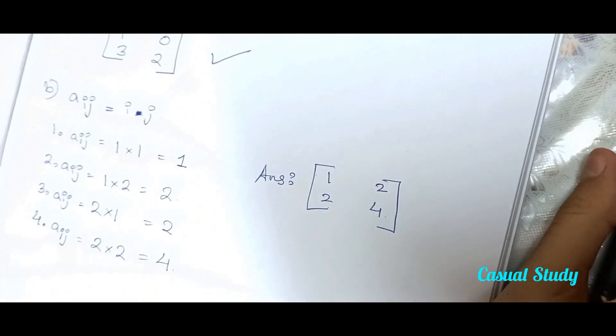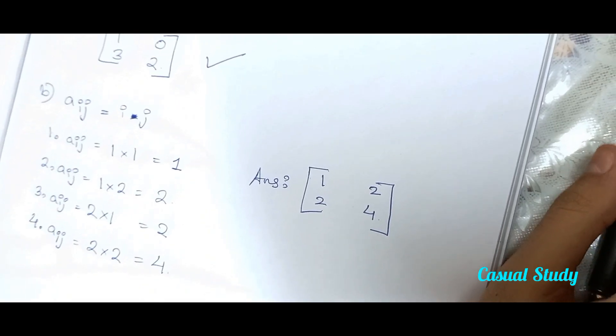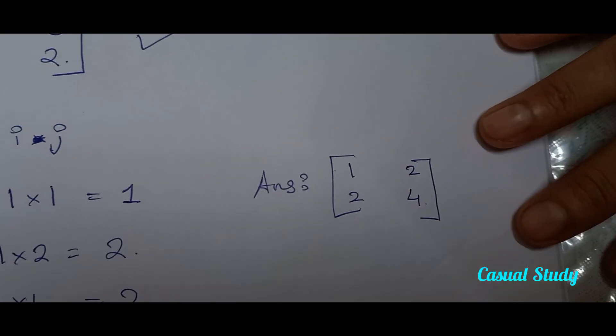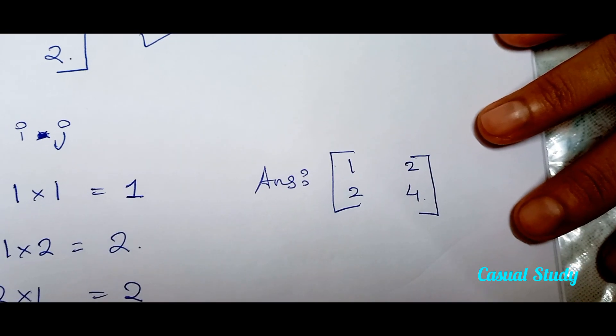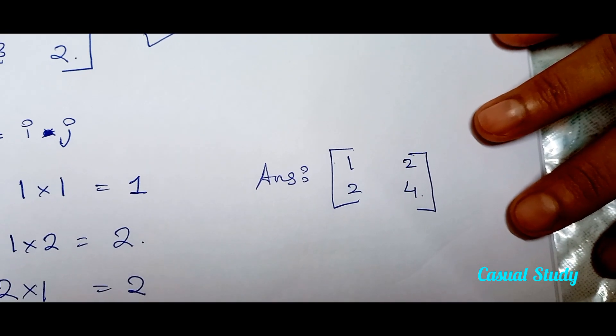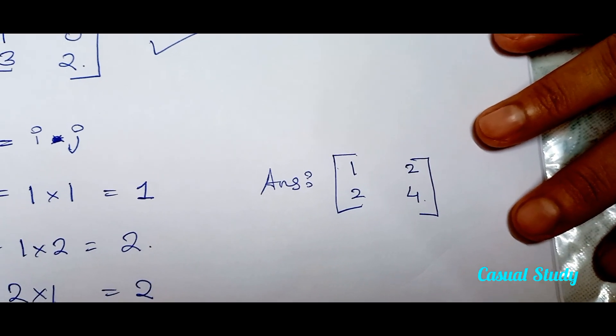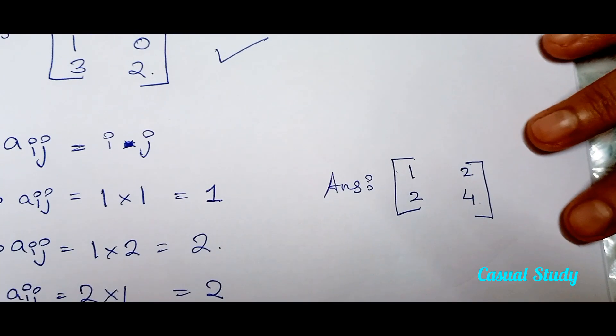So the given matrix would be 1, 2, 2, 4. I will be checking the answer if it is correct. I have checked the answer and it is correct. This is our total answer.